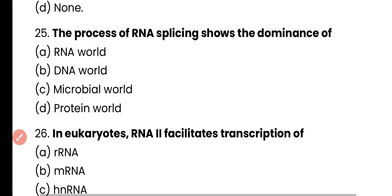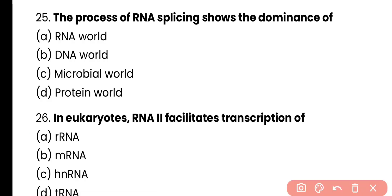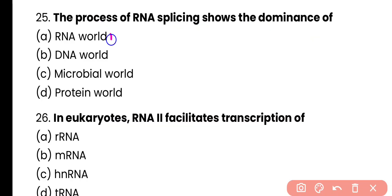Question number 25. The process of RNA splicing shows the dominance of: RNA world, DNA world, microbial world, or protein world? Correct answer is option A. RNA splicing results in the production of messenger RNA, which indicates the dominance of the RNA world.